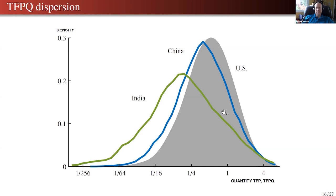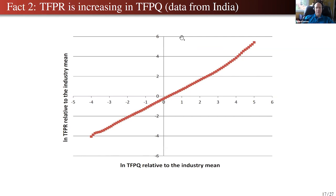Fact two: TFPR tends to be increasing in TFPQ. This is data for plants in Indian manufacturing — TFPQ of a plant relative to the industry mean on the x-axis, and TFPR on the y-axis. There's a strong positive relationship. It's put in bins so it looks even stronger than it is, but it's very systematic. One advantage of using these micro datasets is there are so many observations that the standard errors are very small.